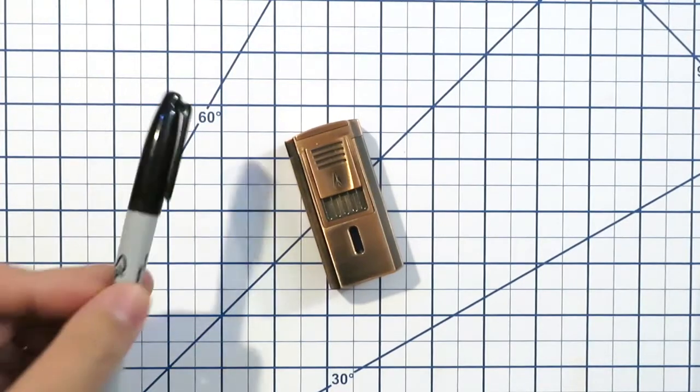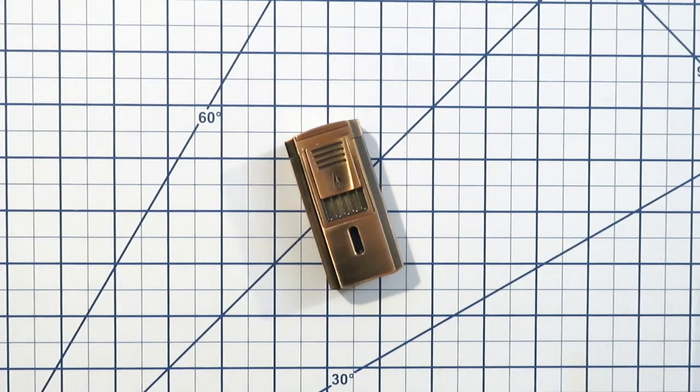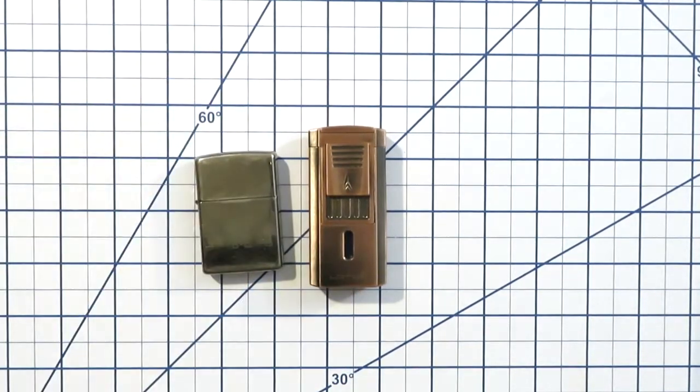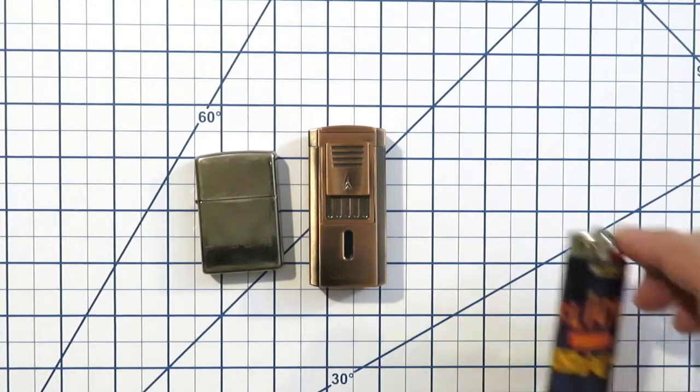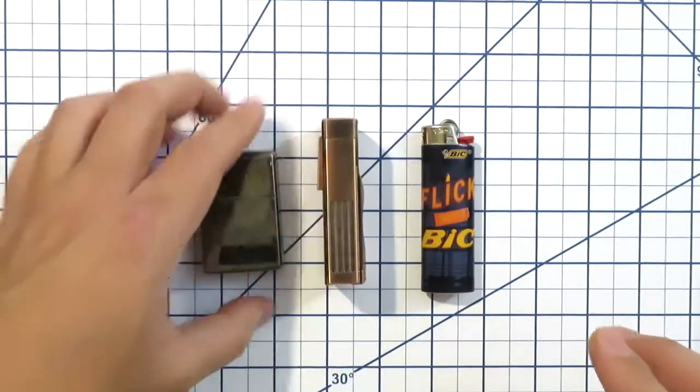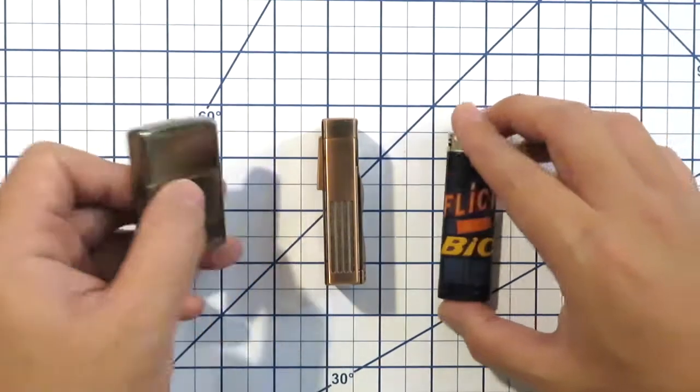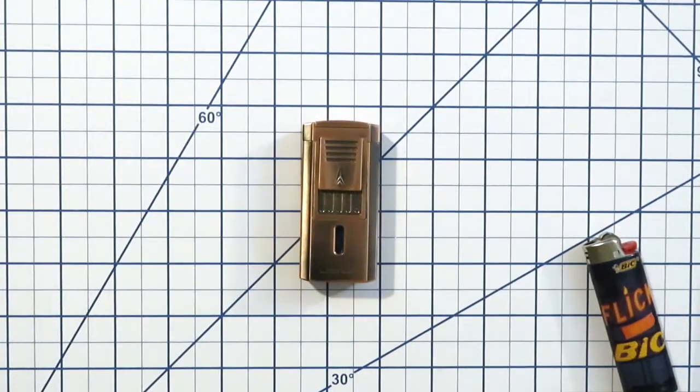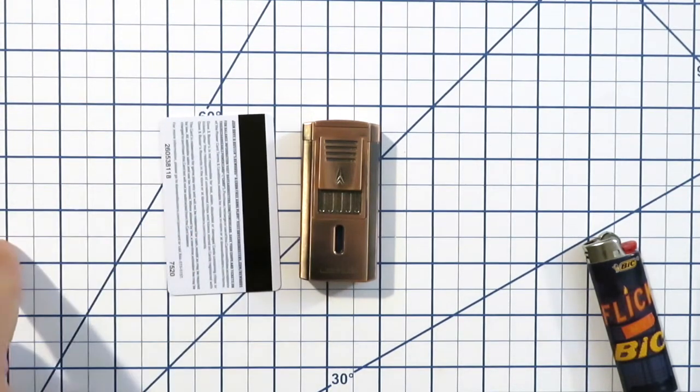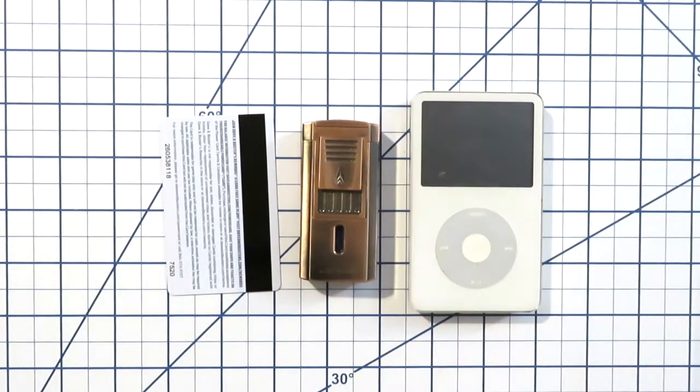For some size comparisons we have our black Sharpie marker, a standard run-of-the-mill Zippo, the ubiquitous Bic lighter, a normal credit card debit card size, and a little bit of a throwback here, an iPod video.